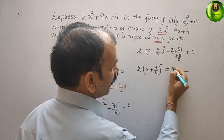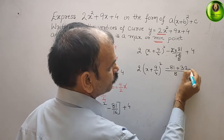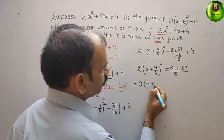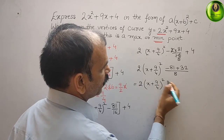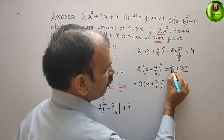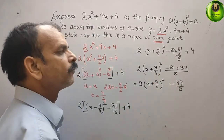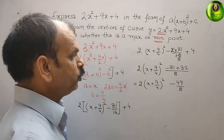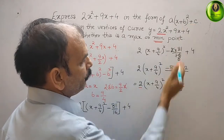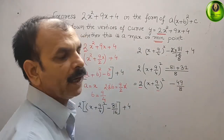Solving this gives 2(x + 9/4)² − 49/8. So the equation is now in the required form. Here A = 2, B = 9/4, and C = −49/8.